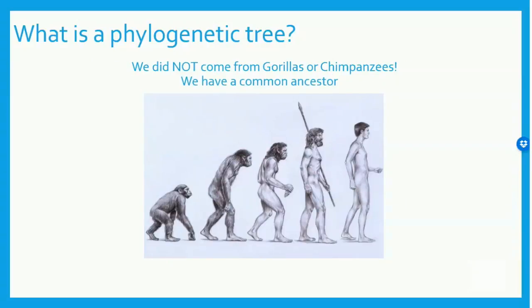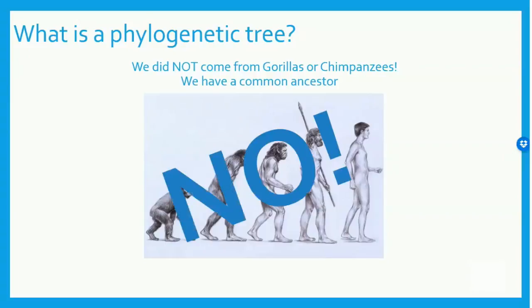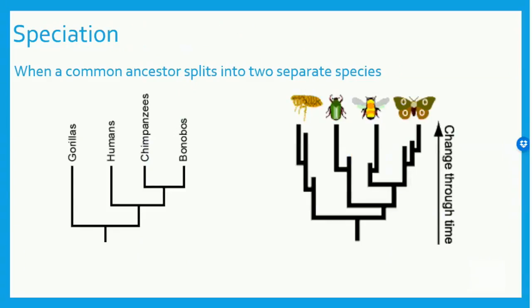Another huge misconception is this depiction of how humans evolved. We did not come from gorillas or chimpanzees. We do, however, have a common ancestor. When a common ancestor splits into two or more separate species, this is considered a speciation event. In phylogenetic trees, a speciation event is represented by a split in the branches of a tree, called a node.